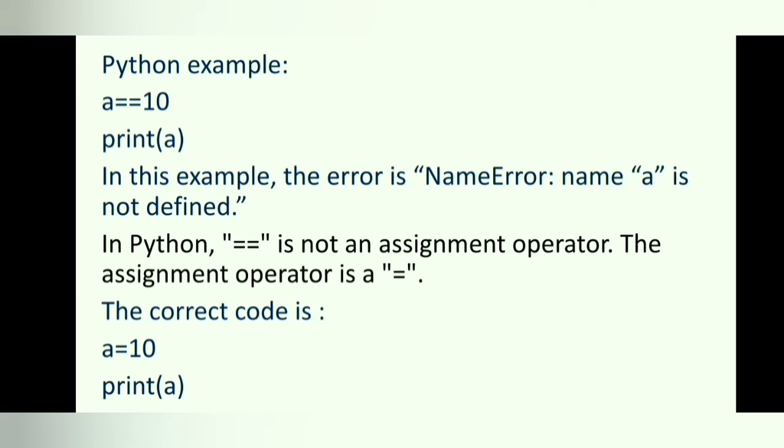Python example: a equals equals 10, print a. In this example, the error is name error, name a is not defined. In Python, double equal signs are not an assignment operator. The assignment operator is a single equal sign. The correct code is a equals 10, print a. Syntax errors are easier to correct because they provide useful error messages which gives an idea about what is wrong with the program.